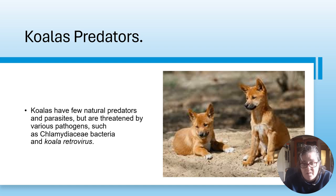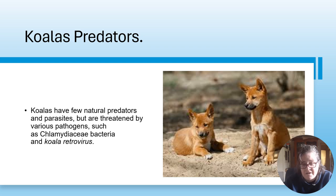The biggest predators of koalas are humans, because of our traffic, roads, deforestation and cutting of trees in Australia. Wild dogs and cats are also a threat, as are viruses. Chlamydia is becoming a real problem for koalas, along with the koala retrovirus. Dingoes, which are a few natural predators, were introduced to Australia roughly 40 to 65,000 years ago.